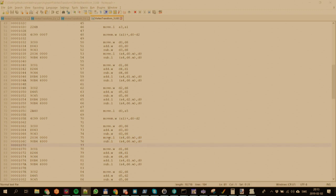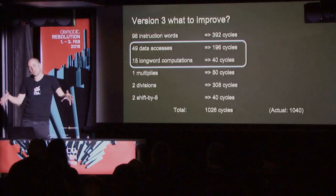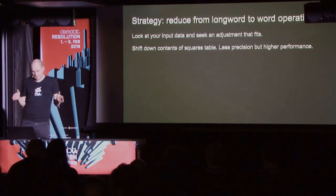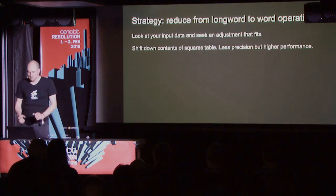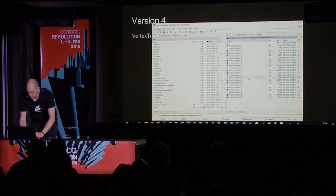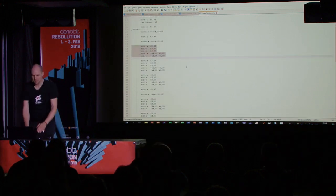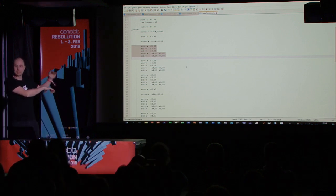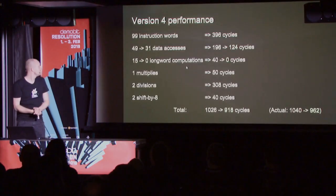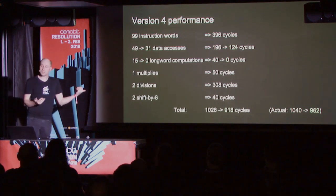What we want to do is get those long word operations down. If we can eliminate long word combinations, we'll automatically get fewer data accesses. Looking at the input data, if we shift things down in the squares table, we can make this work while doing word operations instead. The result is the same block — five lines of code, two memory accesses — repeating over and over, but word operations all the way. That step alone loses a third of the data accesses and all the long word computations. We gained 10%.